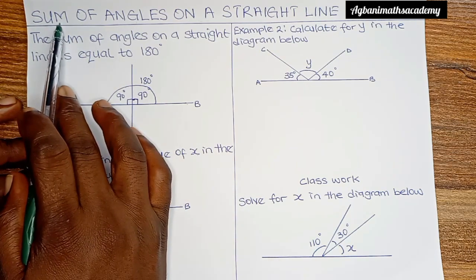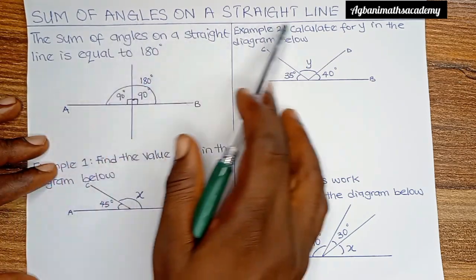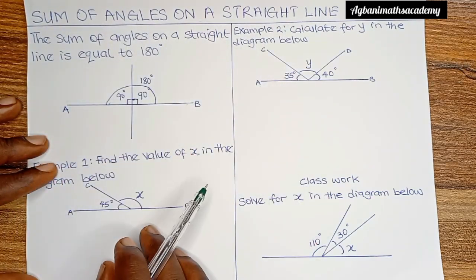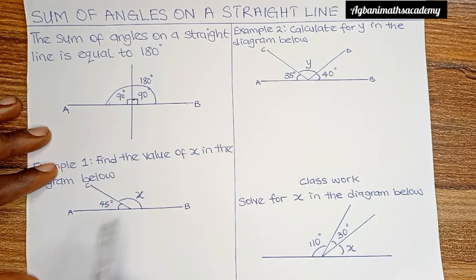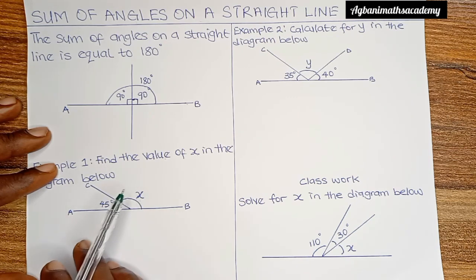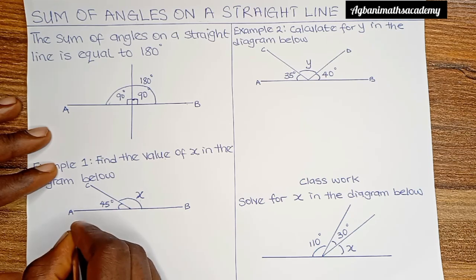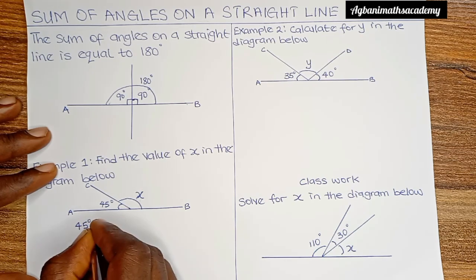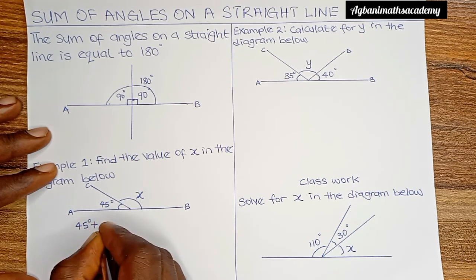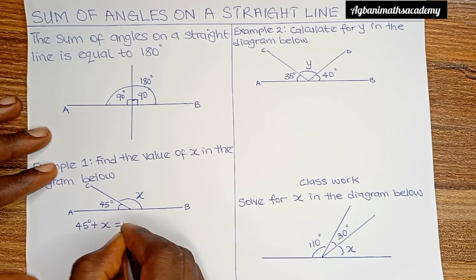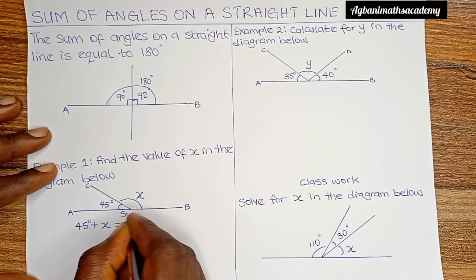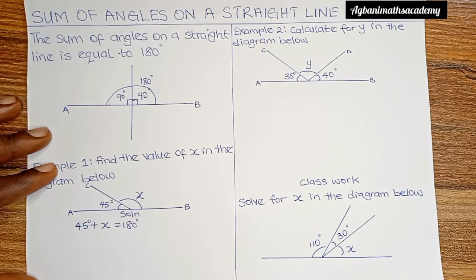To find the value of x, we apply the principle: the sum of angles on a straight line is equal to 180 degrees. That means if you add this angle and this angle, you expect to get 180 degrees. So: 45 degrees plus x is equal to 180 degrees.